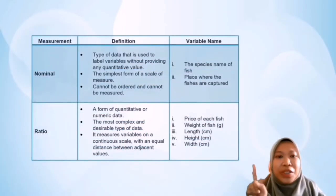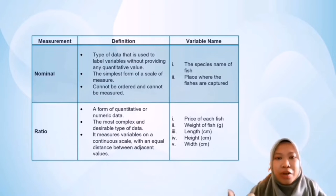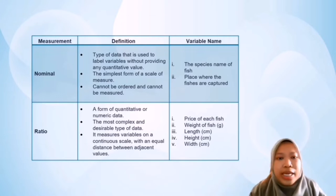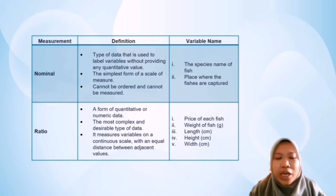The given dataset consists of two categories, namely nominal and ratio. The example of nominal variables are the species name of fish and the place where the fishes are captured. Examples of ratio variables include price of each fish, weight of fish, length, height and weight. Nominal is a type of data used to label variables without providing any quantitative value — it is the simplest form of a scale of measure and cannot be ordered or measured. Meanwhile, ratio is a form of quantitative or numeric data, the most complex and desirable type, and it measures variables on a continuous scale with equal distance between adjacent values.